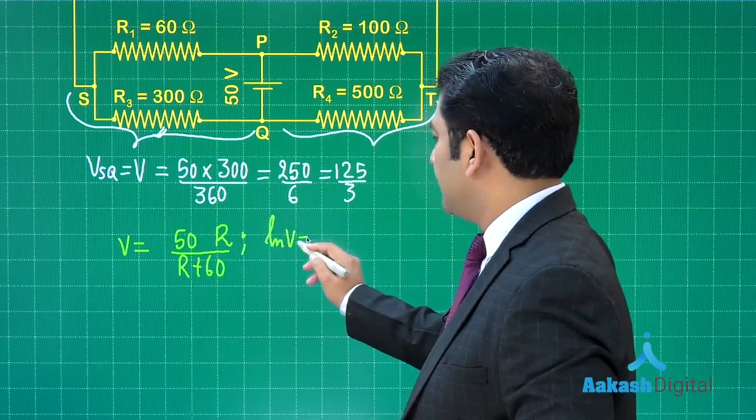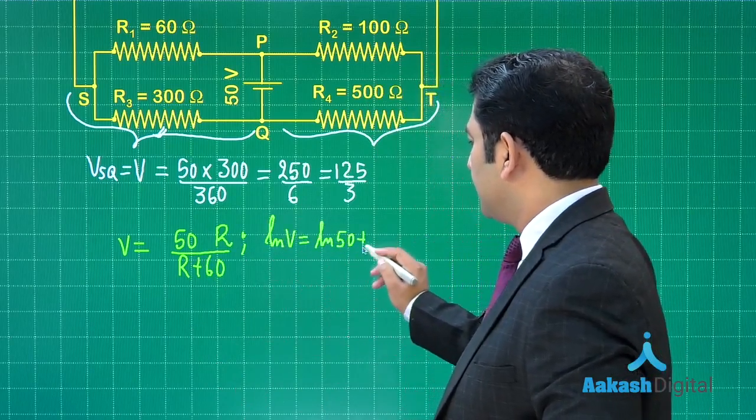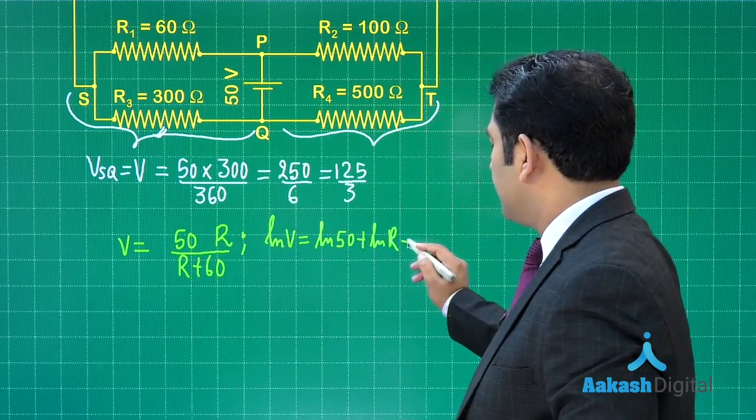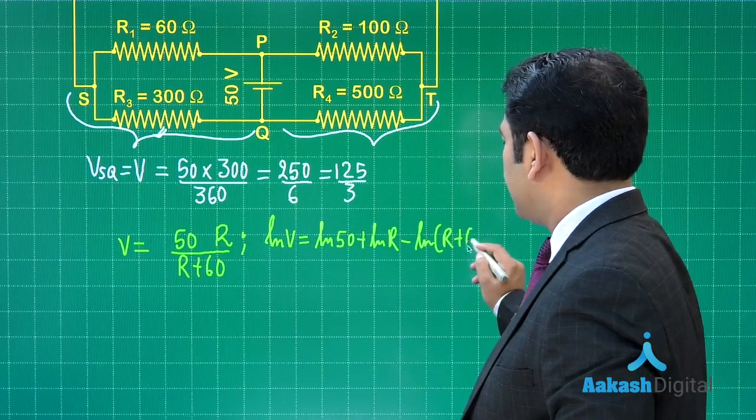So I will have natural log V is natural log 50 plus natural log r minus natural log (r plus 60), all right.